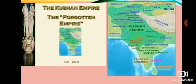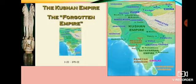The Kushana Empire established itself at Takshila and Peshawar after defeating the Indo-Greeks, the Pahlavas, and the Shakas. Later they occupied the whole of Kashmir and Punjab, and parts of present-day Rajasthan and Uttar Pradesh.